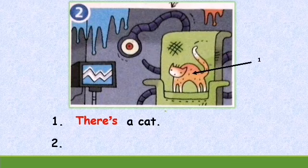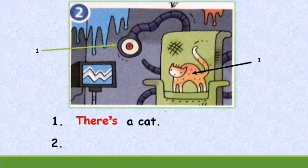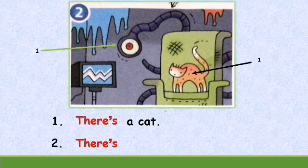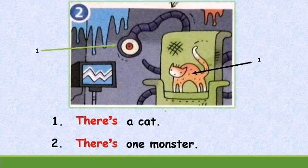Second sentence: how many monsters can you see? Let's count — one. Only one monster. Is it singular or plural? Yes, singular noun. So begin with 'there's'. You can use 'a' or 'one monster': there's one monster. Now let's read together — number one: there's a cat. Number two: there's one monster.